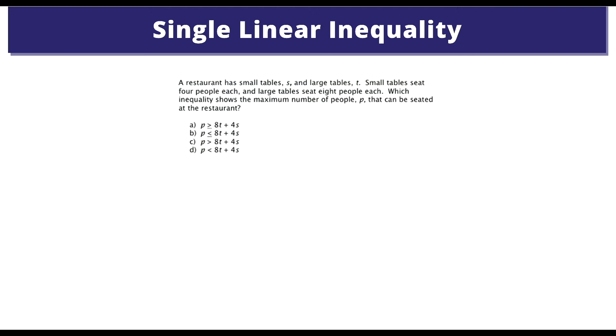A restaurant has small tables S and large tables T. Small tables seat 4 people, and large tables seat 8 people. Which inequality shows the maximum number of people P that can be seated in the restaurant? Let's highlight that, maximum.